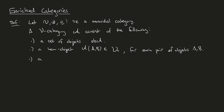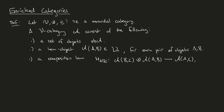Third, we want a composition law. This is a map, which I'll denote M_{A,B,C}, going from the hom object of B and C, tensored with the hom object of A and B, to the hom object of A and C. And this is for each triple of objects of A.